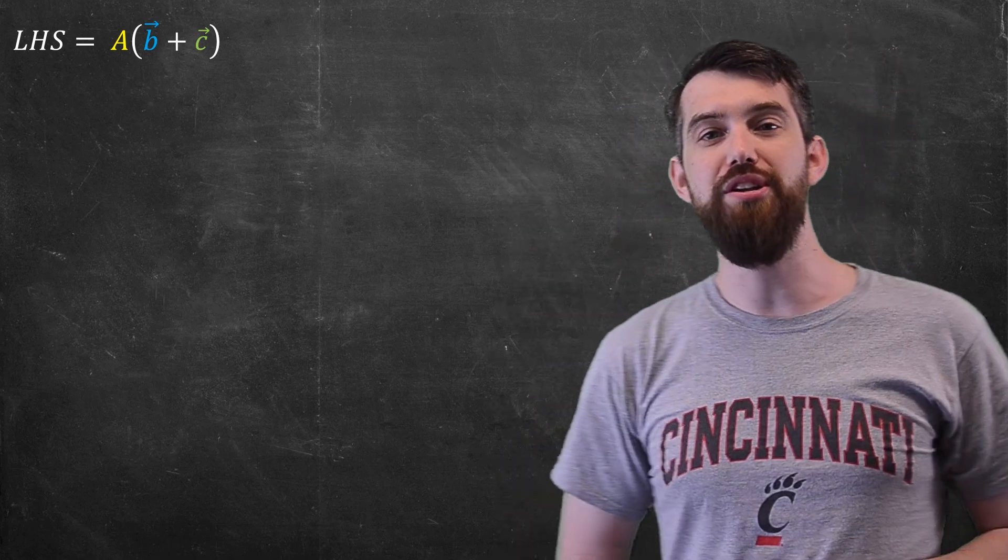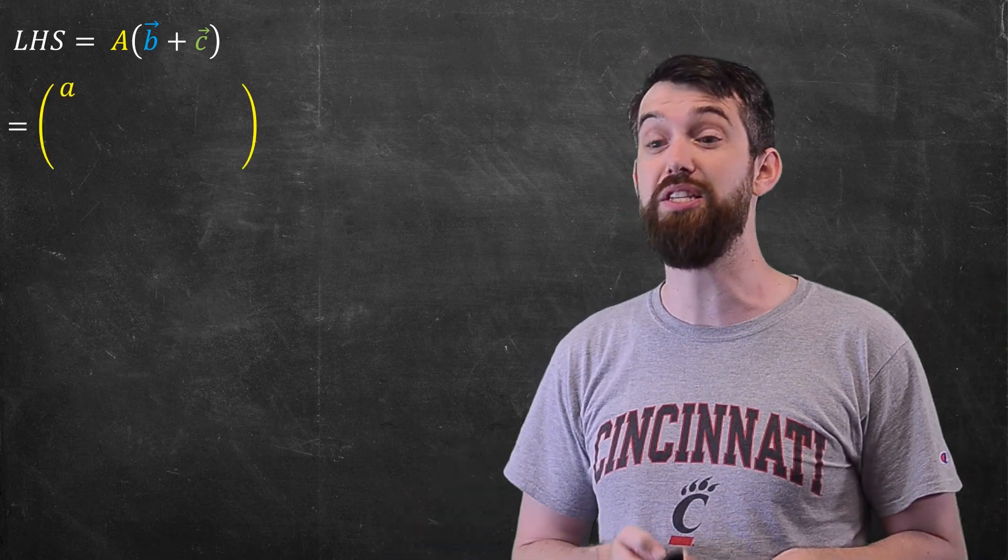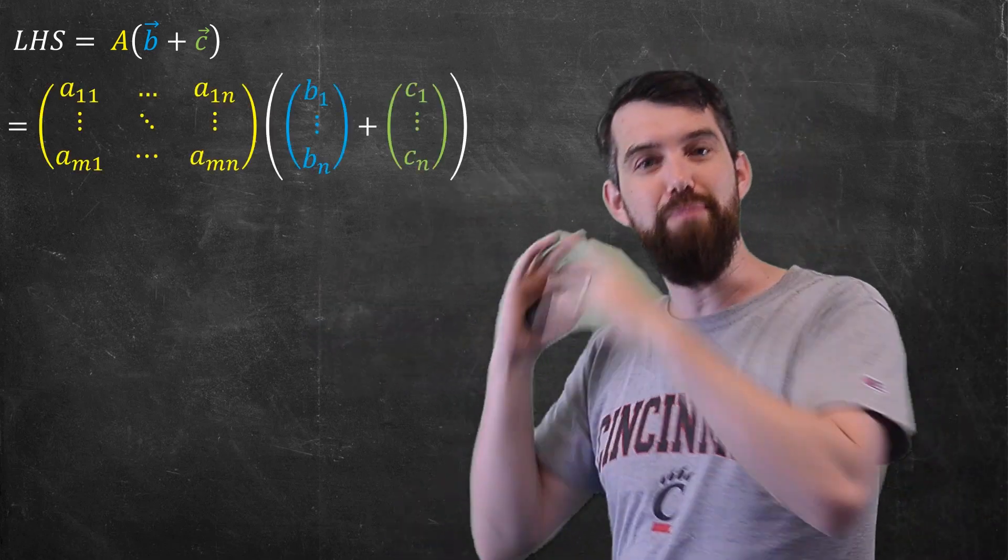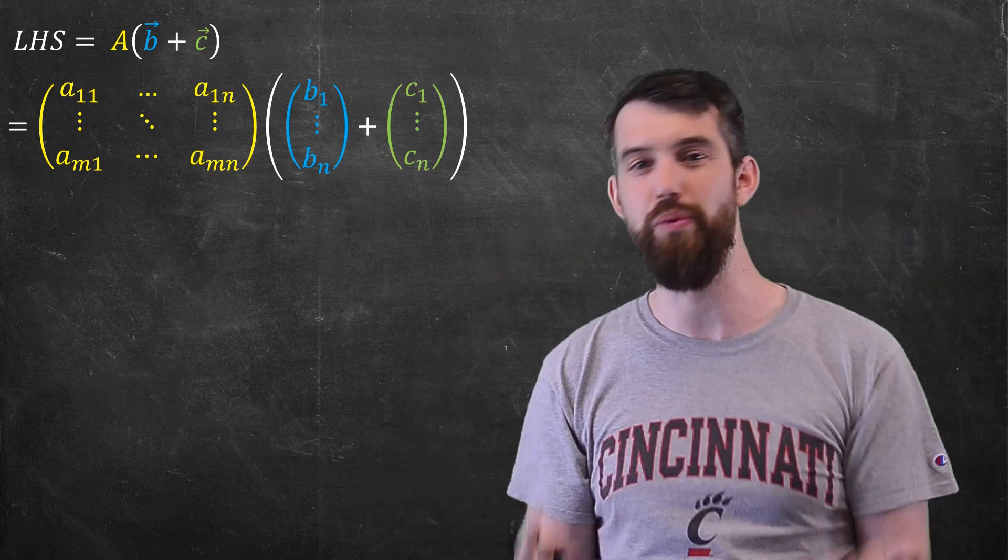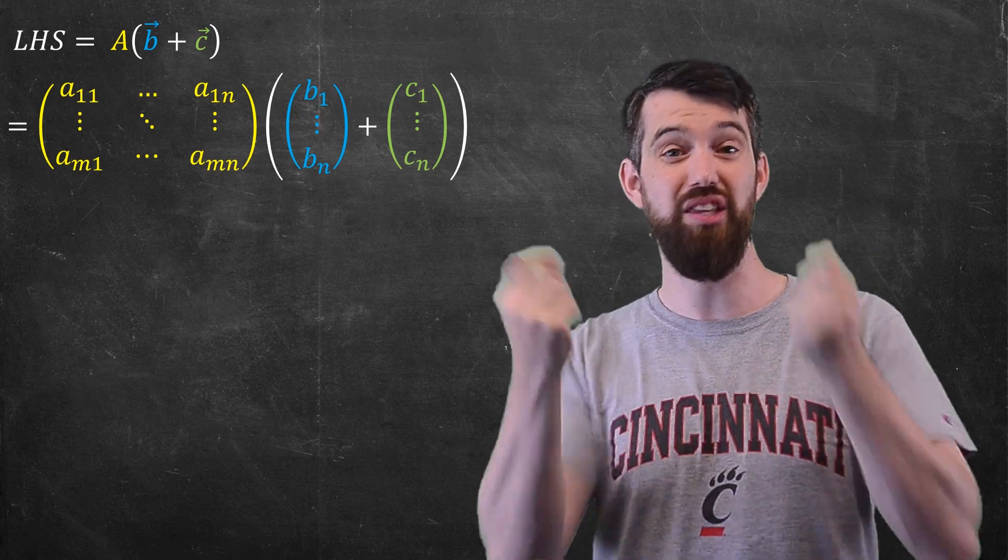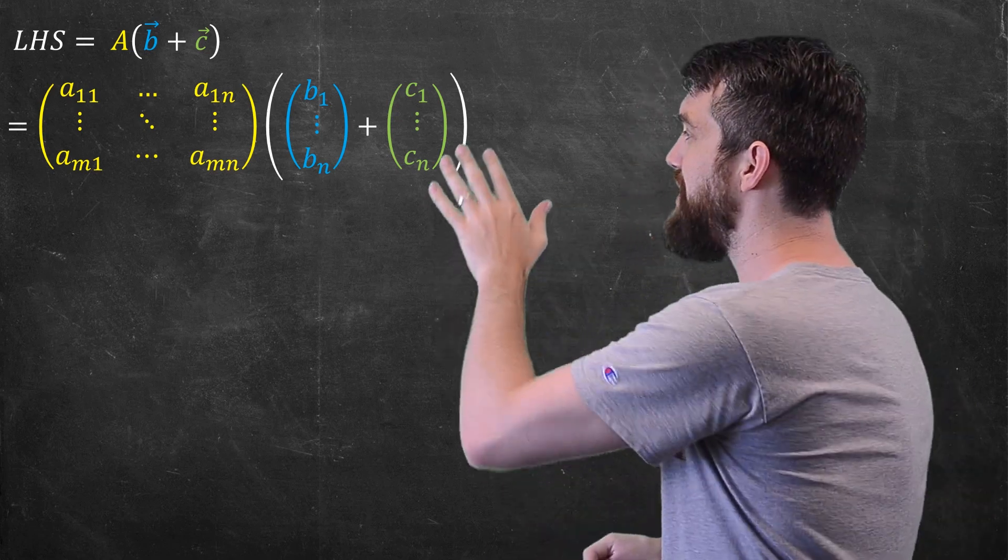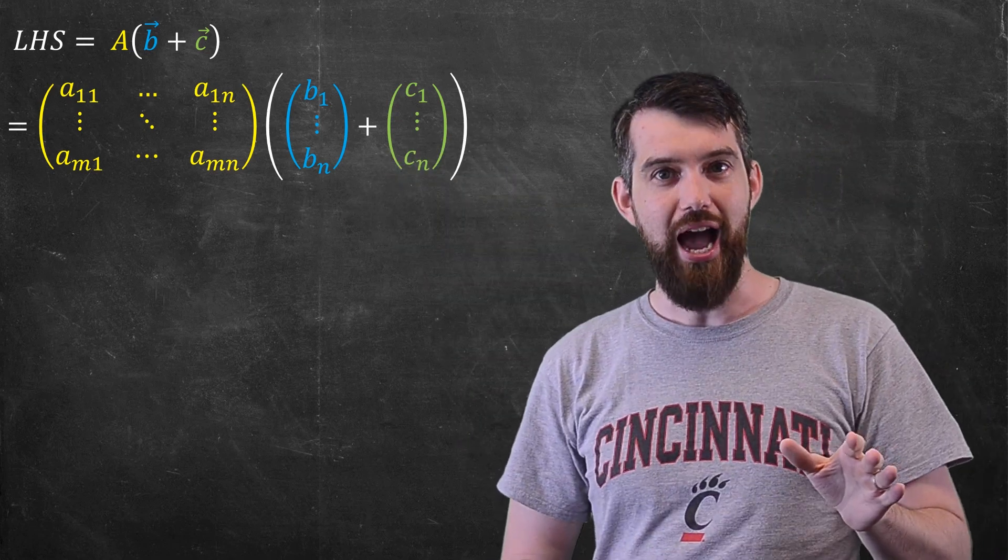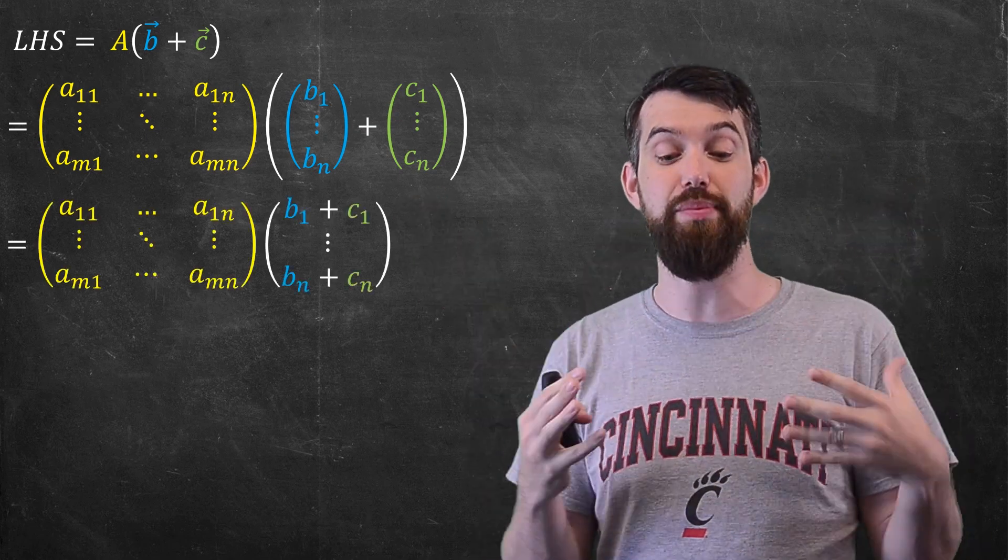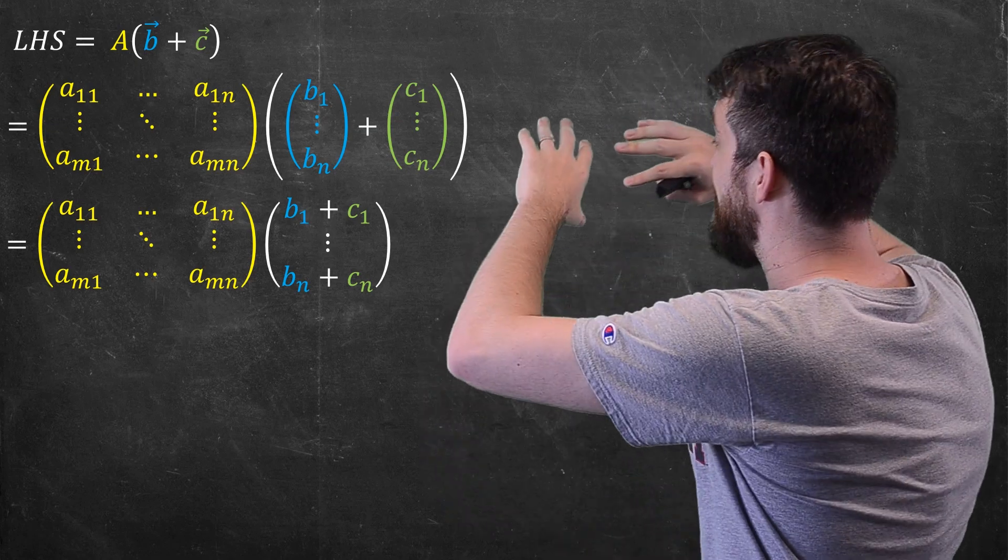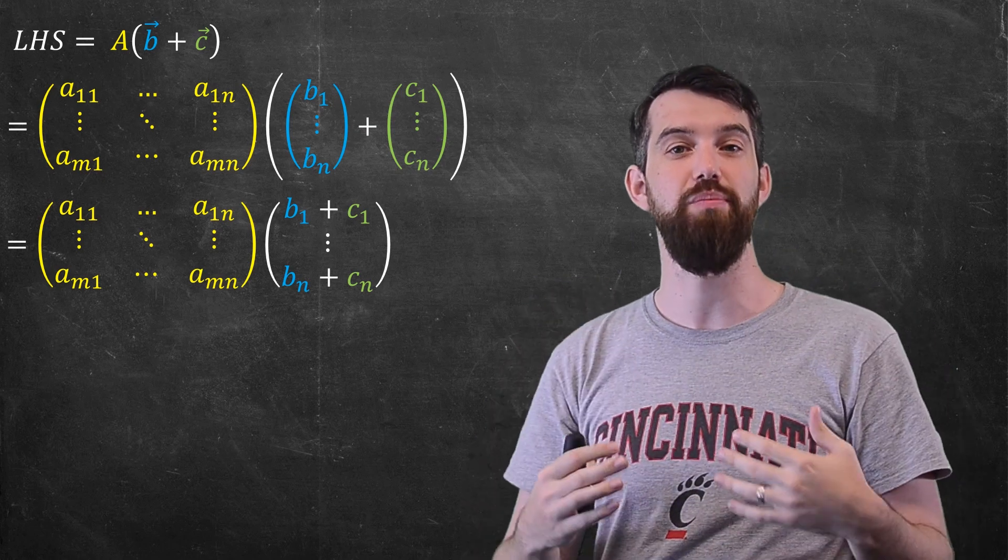So the first thing I want to do, my first obvious step, is let's just use that general notation that we defined. So I'm just going to fill in my A matrix, my B vector, and my C vector with the general notation. Now, what can I actually do with this? One thing I know is I know how to take the sum of two vectors. I know how vector addition is defined. So let's leave the A matrix untouched, and let's take the B and C vectors and smush them together into one vector. Then I'm going to get the same A matrix, but multiplied by the single vector whose components are the B_1 plus C_1 all the way down to the B_n plus C_n.